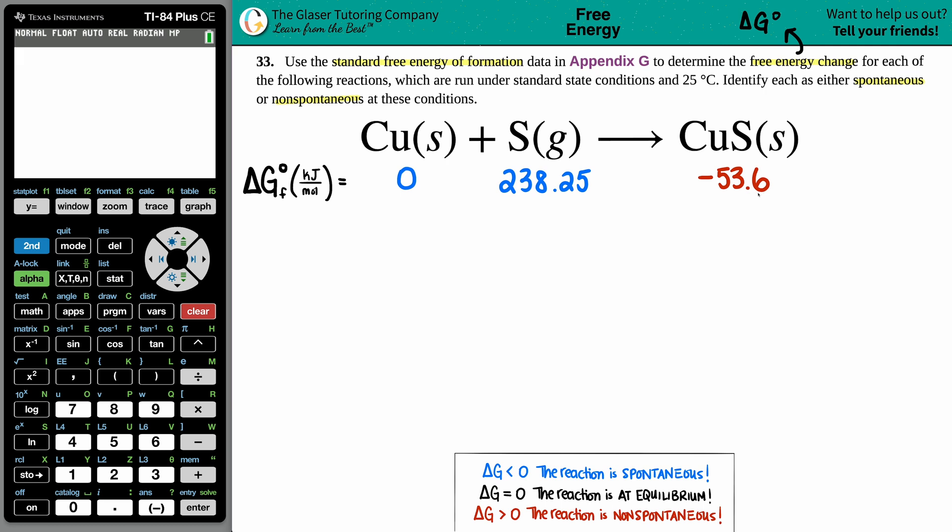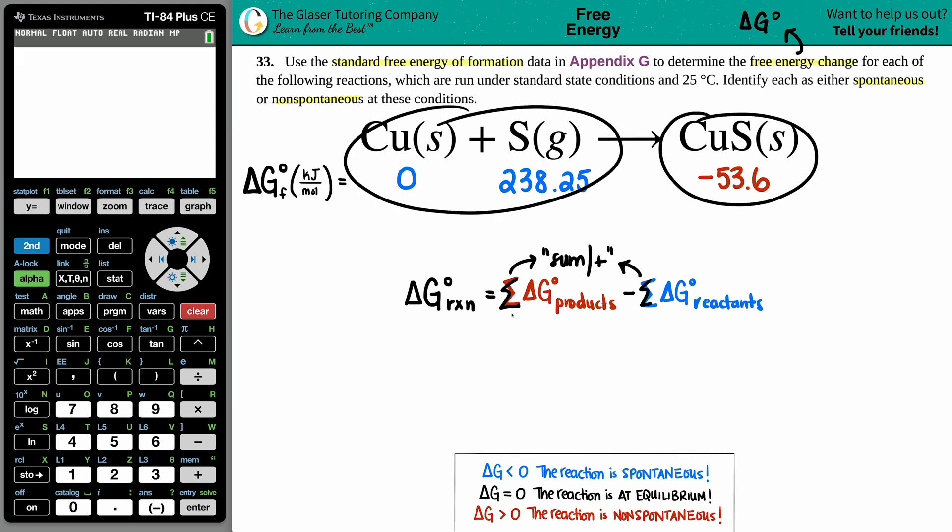Now, what am I going to do with those values to get the standard free energy change? Well, the formula is this: Anytime we're trying to solve for a delta G for a whole entire reaction (RXN is reaction), you're looking for the sum. That's this little symbol here, the sigma. So we're trying to find the sum—that's just addition. We're going to sum up all the products, delta G products, minus the sum of all the delta G reactants. So in essence, it's just products minus reactants.